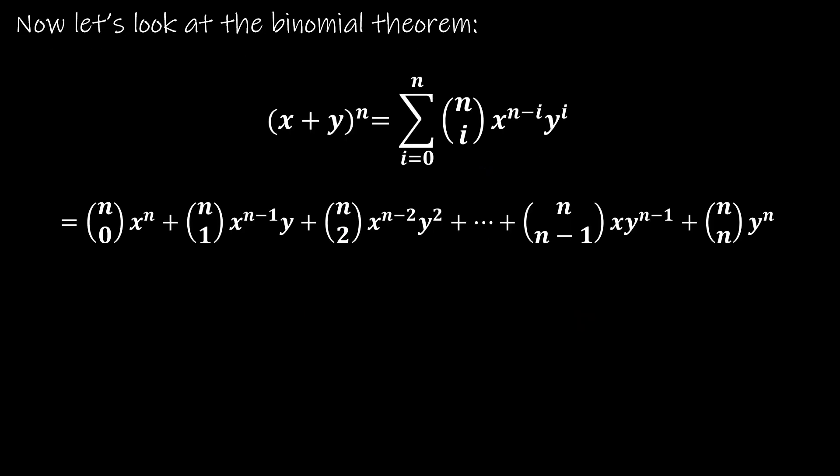So finally we are at the binomial theorem. The binomial theorem says if you have x plus y to the nth power, that is the same as taking the summation — that's why we reviewed summation notation. The index goes from 0 to n, and then n choose i, times x to the n minus i, times y to the i. This is just another symbolic representation of that expansion.